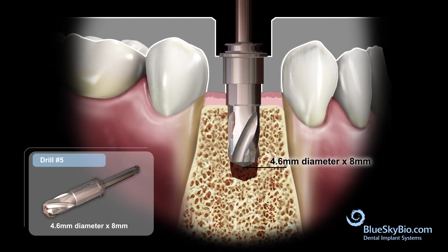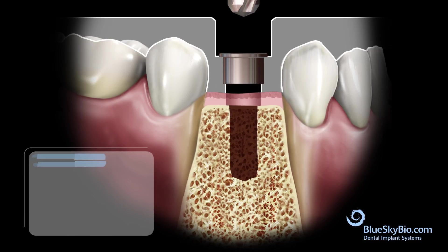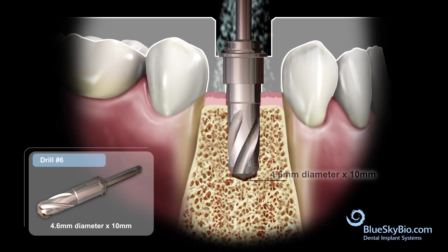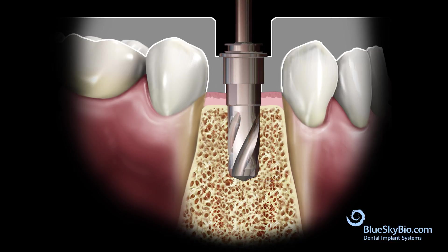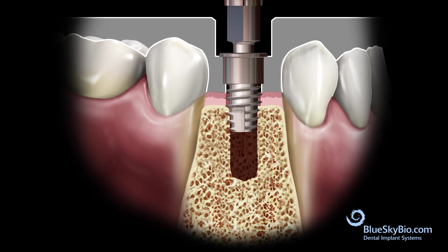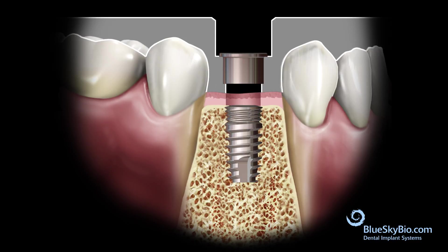The osteotomy procedure is completed. Insert the implant with the guided insertion ratchet driver. The stop section of the guided driver will stop at the top of the master tube — further advancement can damage the bone and cause loss of primary stability.